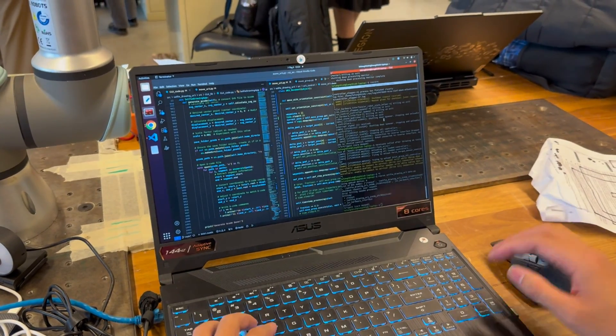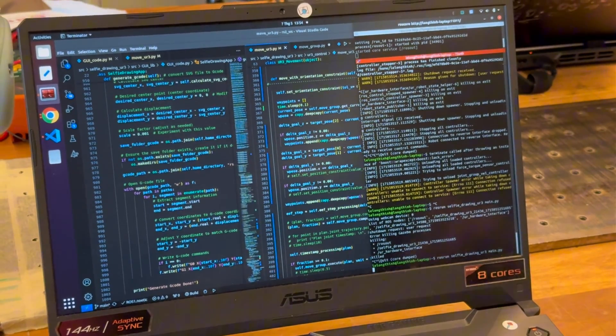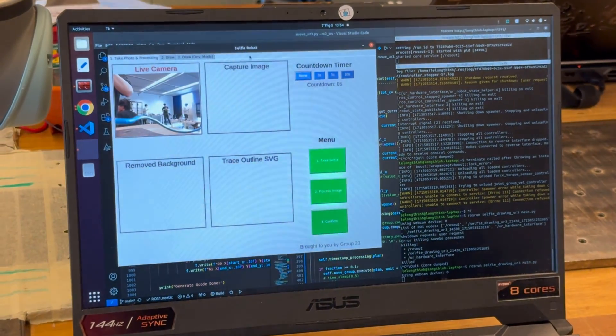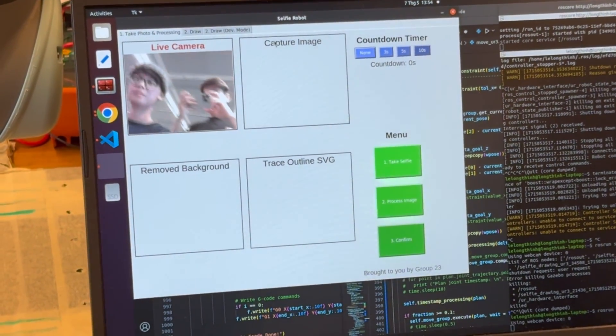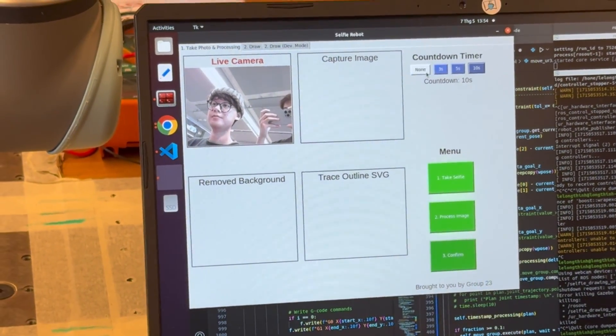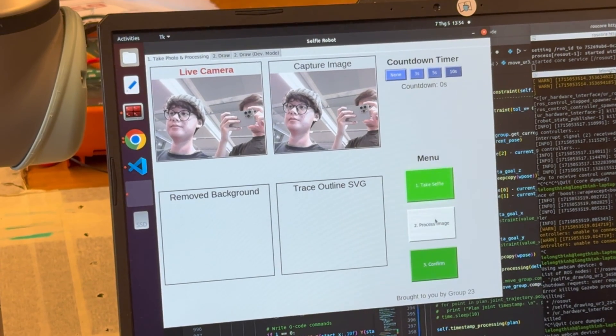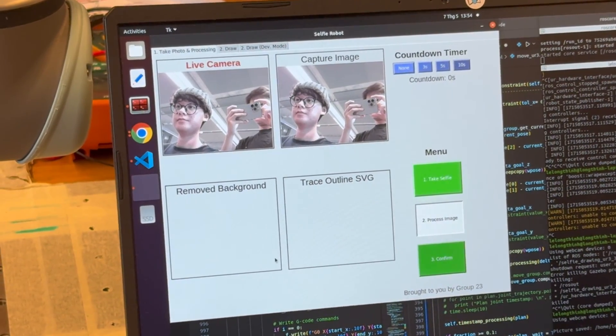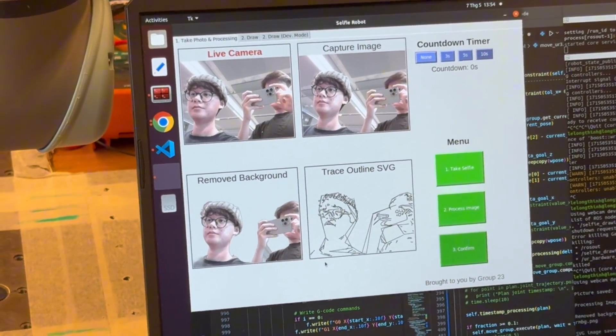Now we are moving to the code. First, we need to run the ROS core, then ROS run the package, which name is selfie-drawing-ur3. And this is our GUI for the project we've built from Tkinter in Python. In this tab, it has the live camera to show the recording image. It also has the countdown timer for the taking picture. If we satisfy with the capture image, we just process the image to get the SVG outline.